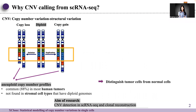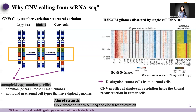One main reason copy number variations are studied in single-cell cancer research is that normal cell types always have diploid genomes, while aneuploid copy number profiles are always related to human tumors. The identification of copy number variation profiles in single cells can help distinguish tumor cells from normal cells, and copy number variation profiles at single-cell resolution help with clonal reconstruction in tumor cells.